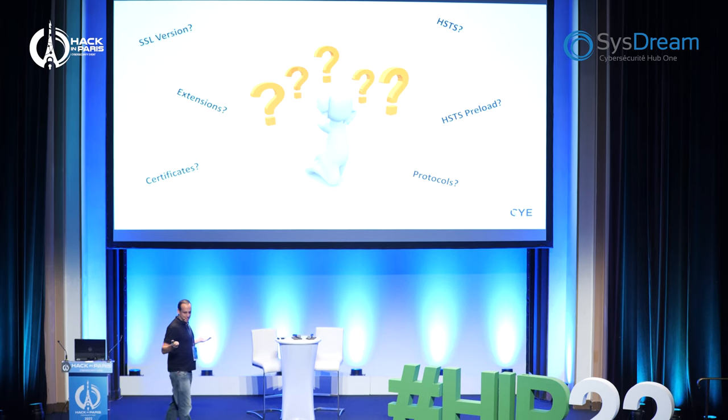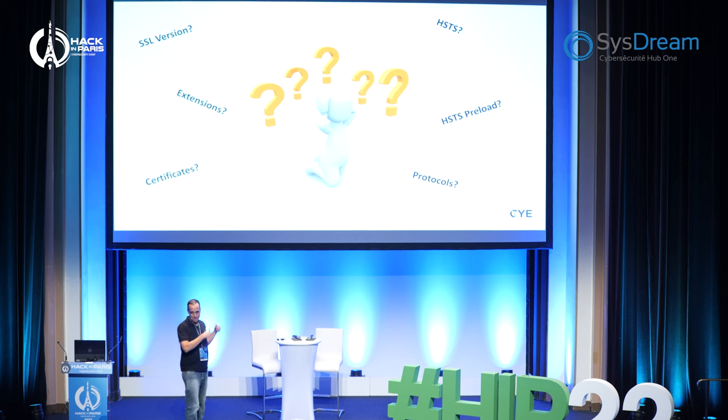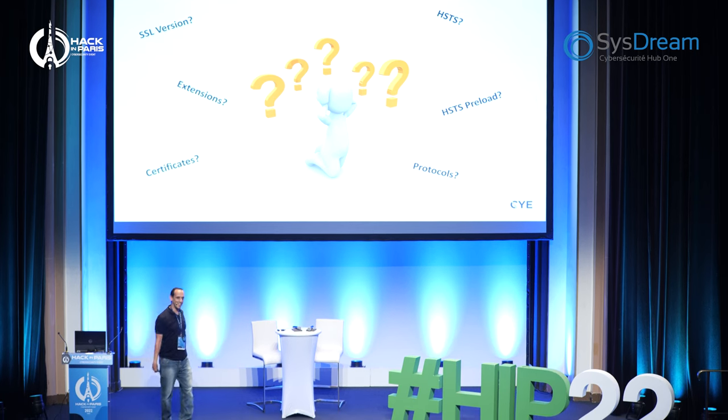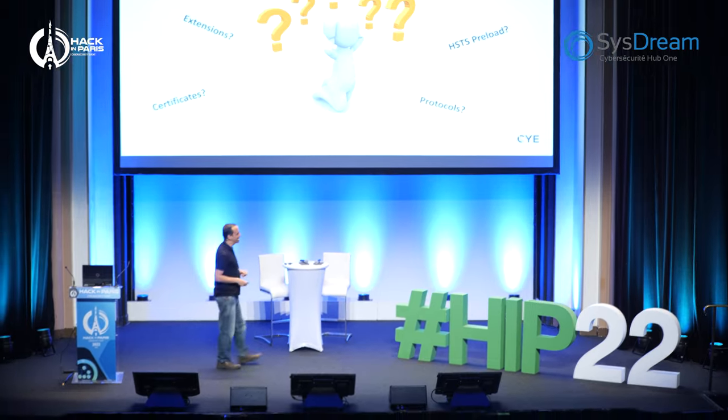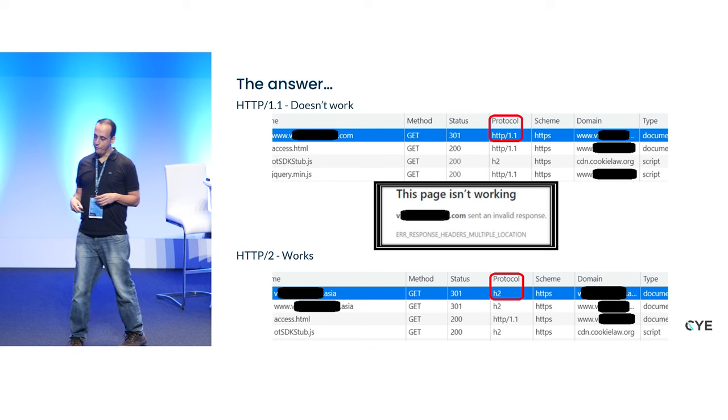We started to dig like crazy — researching what's going on. Why do these two very similar cases behave differently? The response looks identical — nothing different except .com vs .asia. We started thinking: maybe it's the SSL/TLS version, some extension, a certificate difference, maybe HSTS (the mechanism that forces HTTPS), maybe the HSTS preload list, maybe a different protocol. We didn't know until we found the answer.